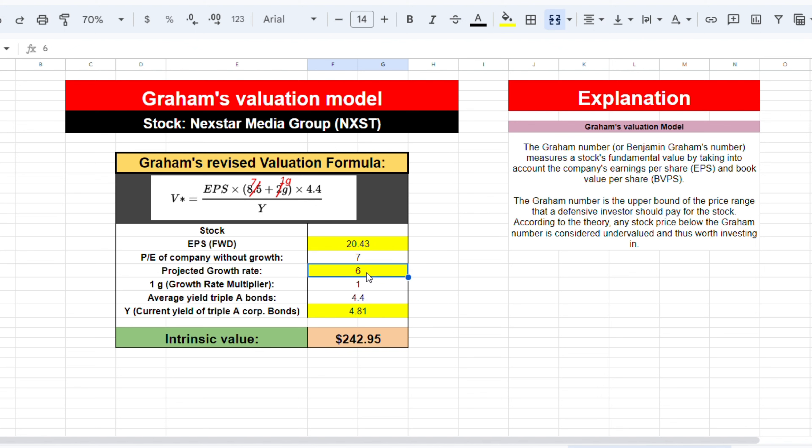which is based on analysts' expectations, and multiply that by 4.4, the average yield of AAA bonds. Dividing this number by the current yield on AAA bonds, 4.81, we come to an intrinsic value of $243.